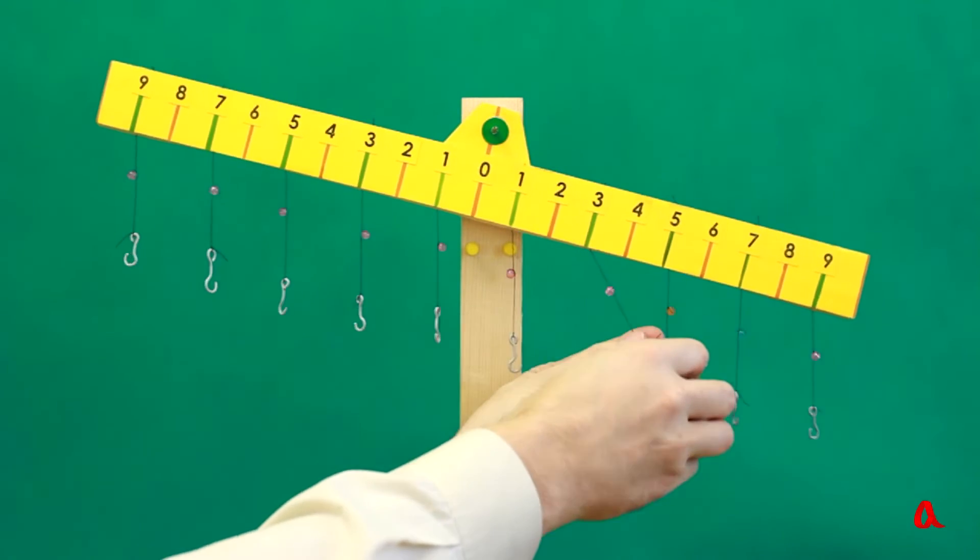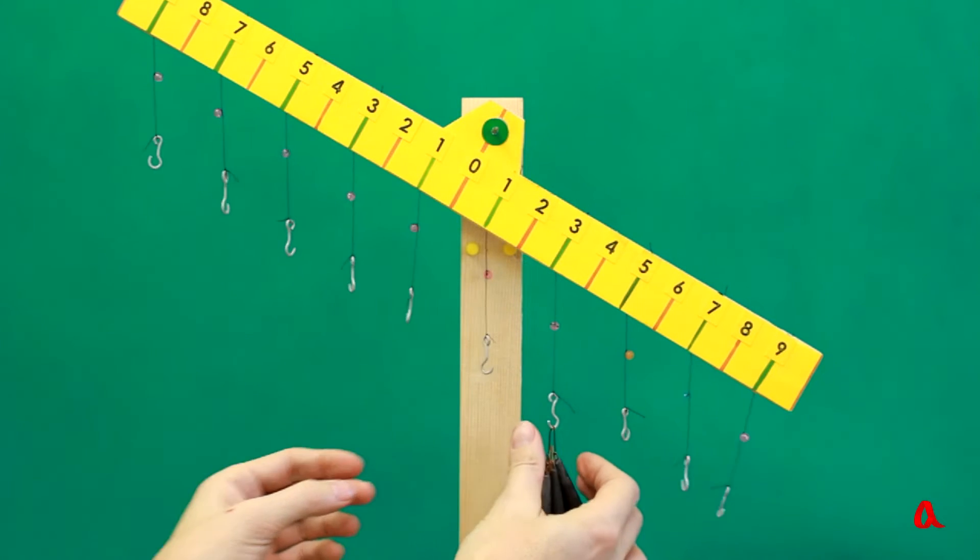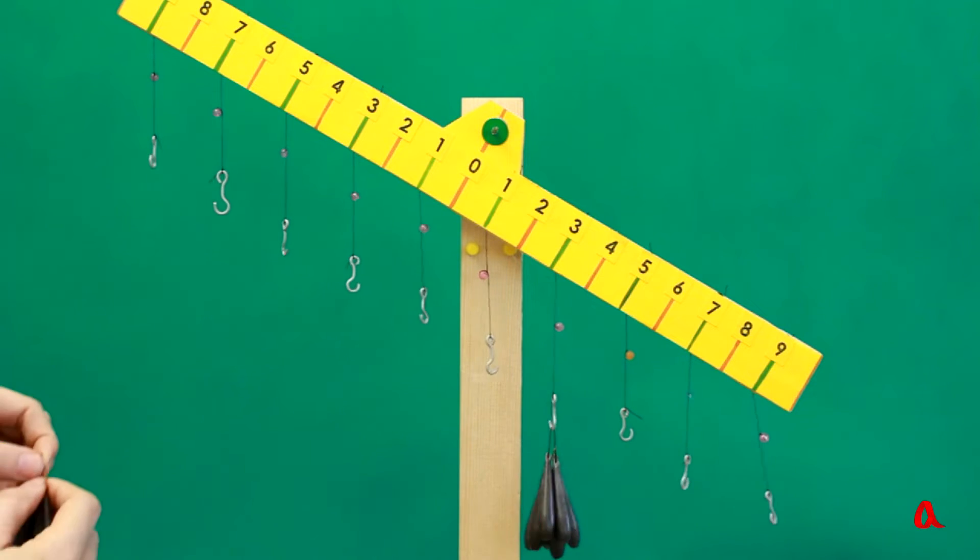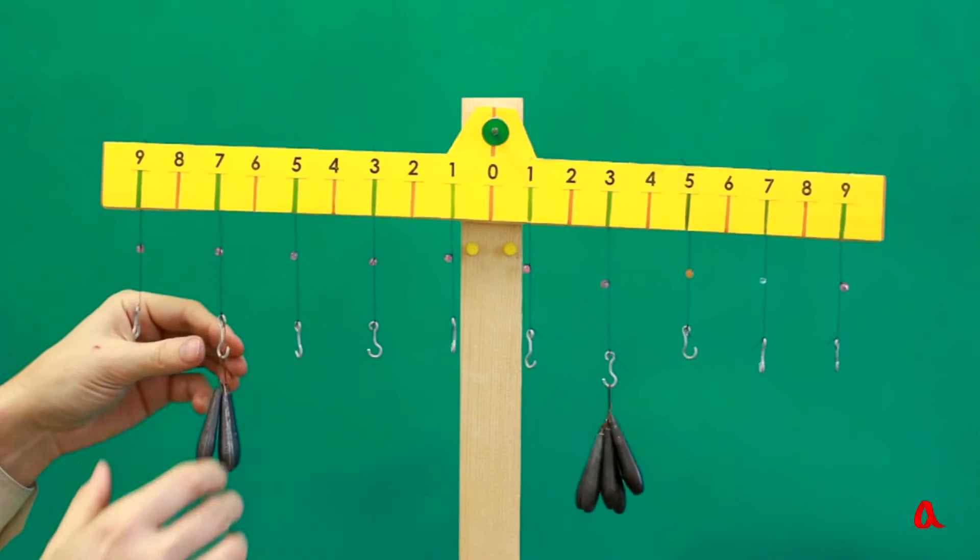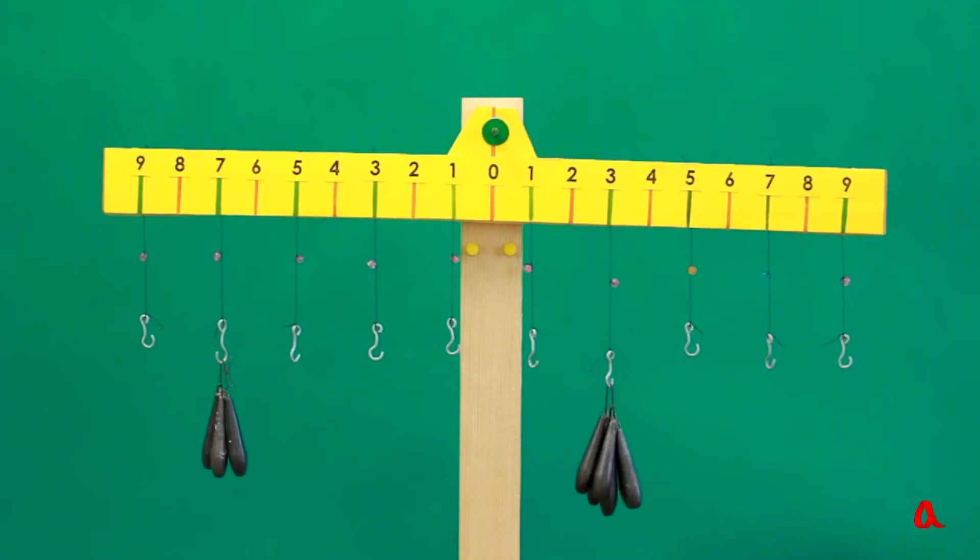For instance, let's take the loads of 7 and 3 units. Let's suspend the 7-unit load onto the arm of 3-unit length. Then the 3-unit load should be suspended onto the arm of 7-unit length. We can see that in this case the lever remains in equilibrium.